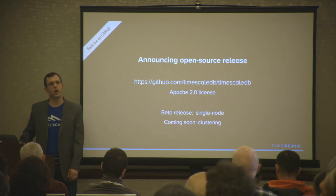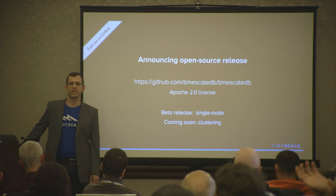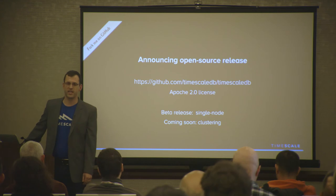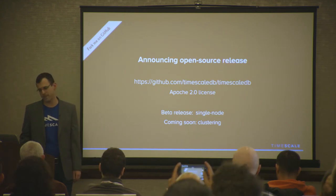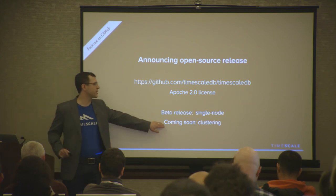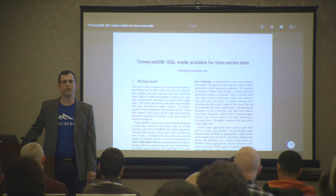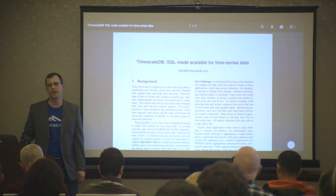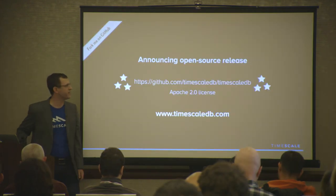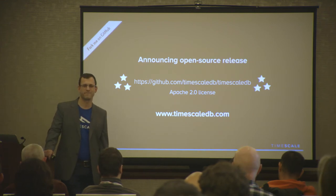Three weeks ago, we open sourced TimescaleDB — we'd been running a hosted version for six to eight months with some customers. It's released under the Apache 2 permissive license and available on GitHub. The current beta release is a single node with clustering coming soon. There's also a fairly technical white paper available on our website. Download it, give us some GitHub stars if you want, and I'm happy to take questions.